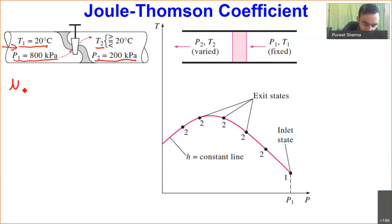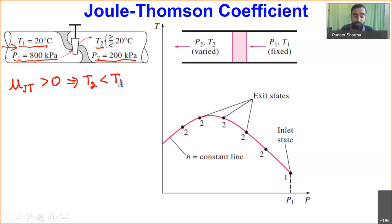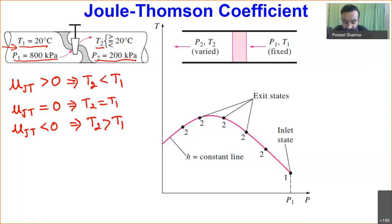The symbol for Joule-Thompson coefficient is μ with subscript JT. If the value of μ_JT is greater than zero, then T2 will be less than T1 — we will have a decrease of temperature. If μ_JT equals zero, then T2 equals T1 — no change in temperature. And if μ_JT is less than zero, then T2 will be greater than T1 — upon expansion we will have heating of the substance.